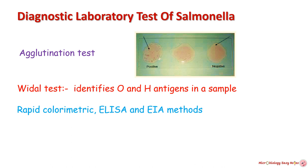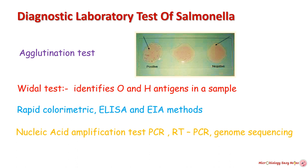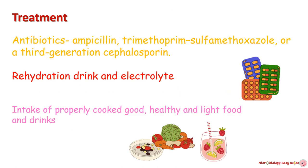Other tests include rapid colorimetric ELISA and EIA methods. Nucleic acid amplification tests like PCR, RT-PCR, and genome sequencing are also available for diagnosis of salmonella. Recently, biosensors have also been developed for rapid detection. For treatment, antibiotics such as ampicillin, trimethoprim-sulfamethoxazole, or a third-generation cephalosporin can be given. For patients suffering from severe diarrhea, replacement of fluid and electrolytes is essential.